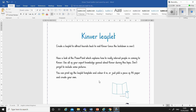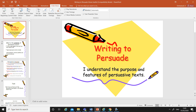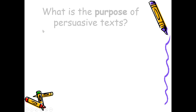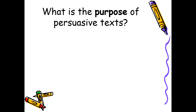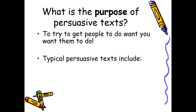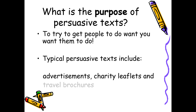Let's have a look at the PowerPoint. This is about writing persuasively, so you'll be able to understand the purpose and features of persuasive texts. The purpose of a persuasive text is to try to get people to do what you want them to do. People who work in advertising, marketing, and PR are always trying to get us to buy things, visit places, or do things to encourage us to participate. Typical persuasive texts include adverts, charity leaflets, and travel brochures.